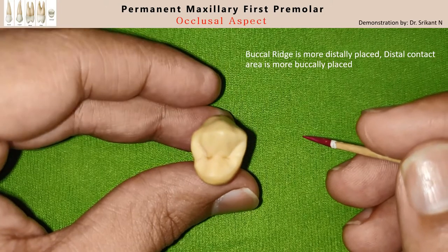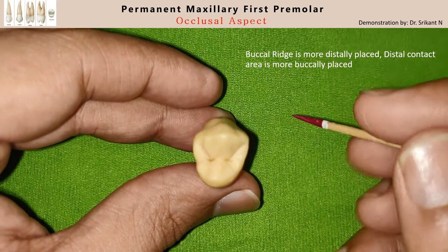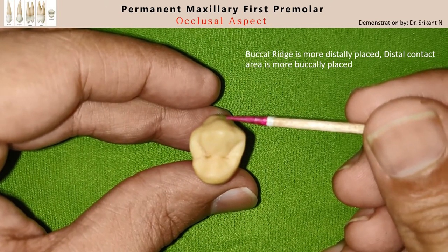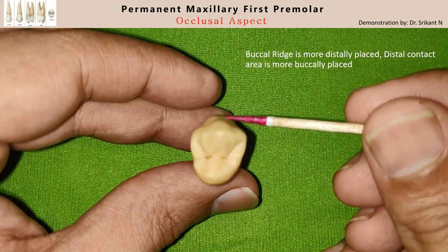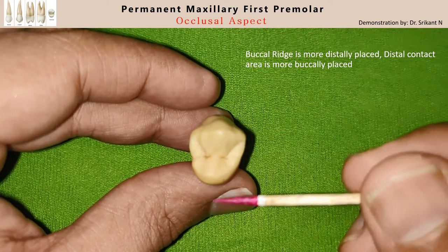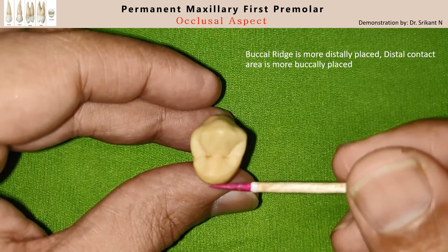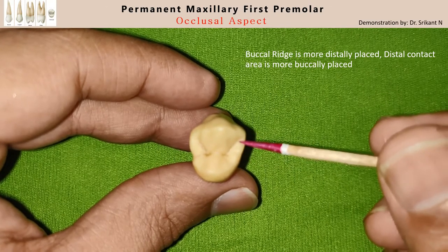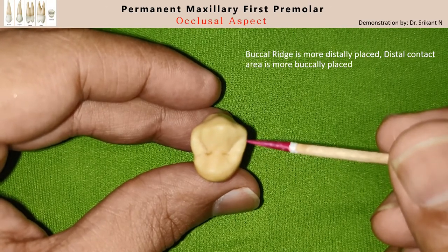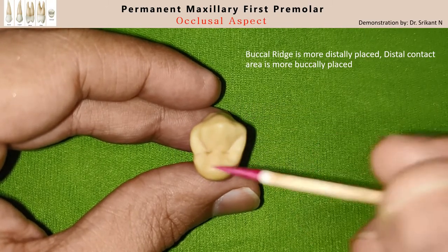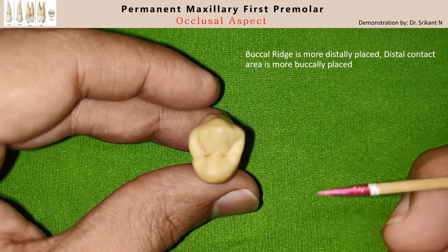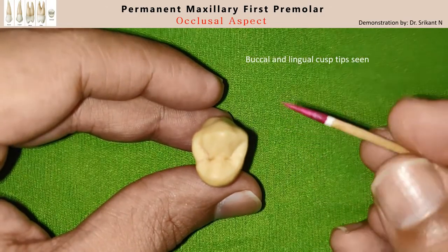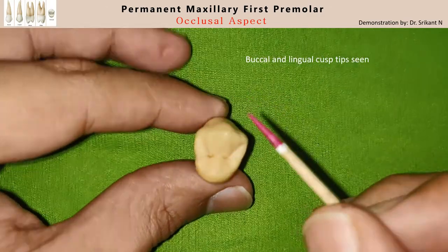When you look at this particular tooth in a bounded rectangle, you will observe that the buccal ridge is more distally placed compared to the lingual ridge. Similarly, the distal contact area is more buccally placed than the mesial contact area.